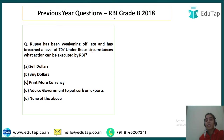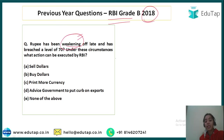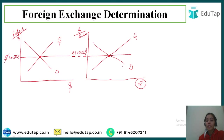Here is a previous year question showing why this topic is very important for the RBI Grade B exam. A question was asked in 2018 about the rupee weakening — what is the meaning of 'weakening'? We will understand that today, after we cover managed floating rate and flexible rate.